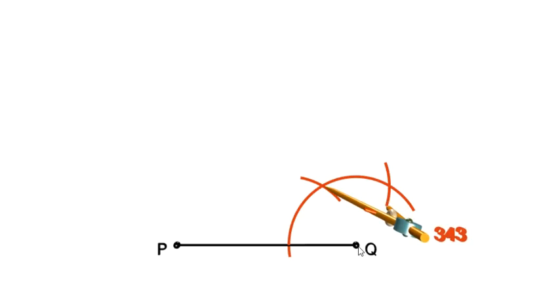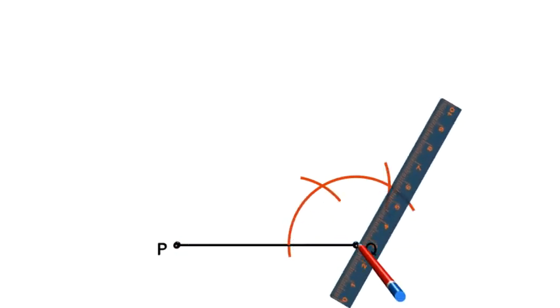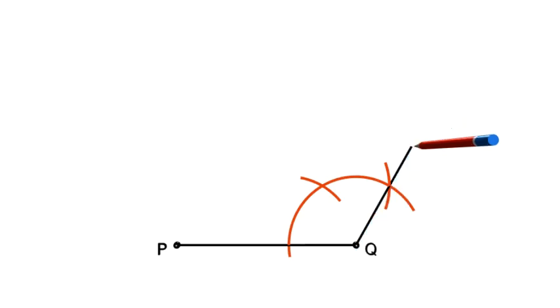Now a line from Q through where these two arcs intersect the first arc, that will give me my 120 degree angle. This line I'm going to draw is QR, so it's going to be of length 5 cm. So, I'm going to now draw QR of length 5 cm. Where the line stops, that's 5 cm, and that is the point R.